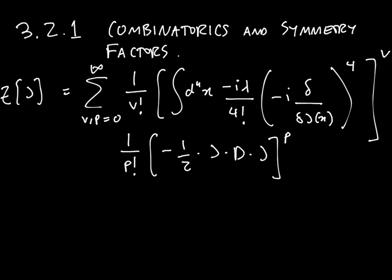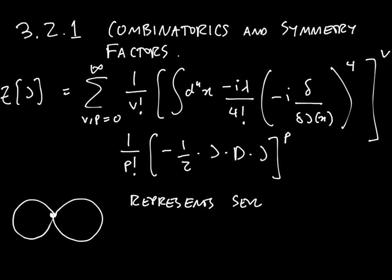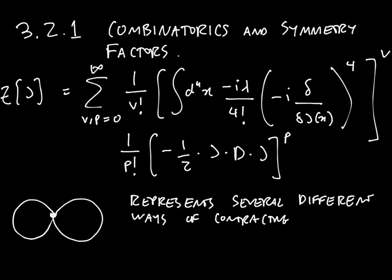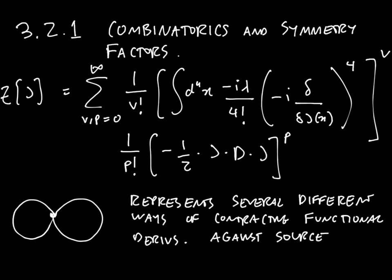When we draw a particular Feynman diagram — for example, let's say this one — it actually represents several different ways of contracting functional derivatives against sources. The question we need to answer in order to get the right factor in the Feynman diagram is: how many different ways does it represent contracting functional derivatives against sources?